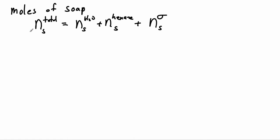Now the cool thing is that these are easy to measure. We know how much soap we put in. We can do a chemical analysis of the bulk of the water and the bulk of the hexane, as we mentioned earlier. So by subtraction, we can actually figure out how many molecules are excess at the surface.